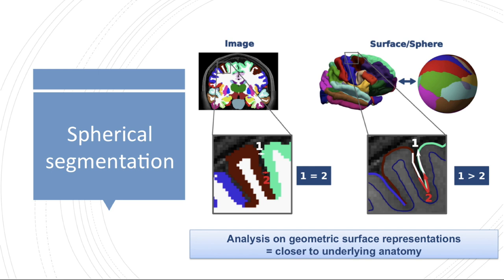As an example, on the voxel grid depicted here on the left, the pixels connected by arrow 1 and arrow 2 appear to be equally close to each other, while on the cortical surface we can see that they differ in their distance from each other, with pair 1 being further apart than pair 2.